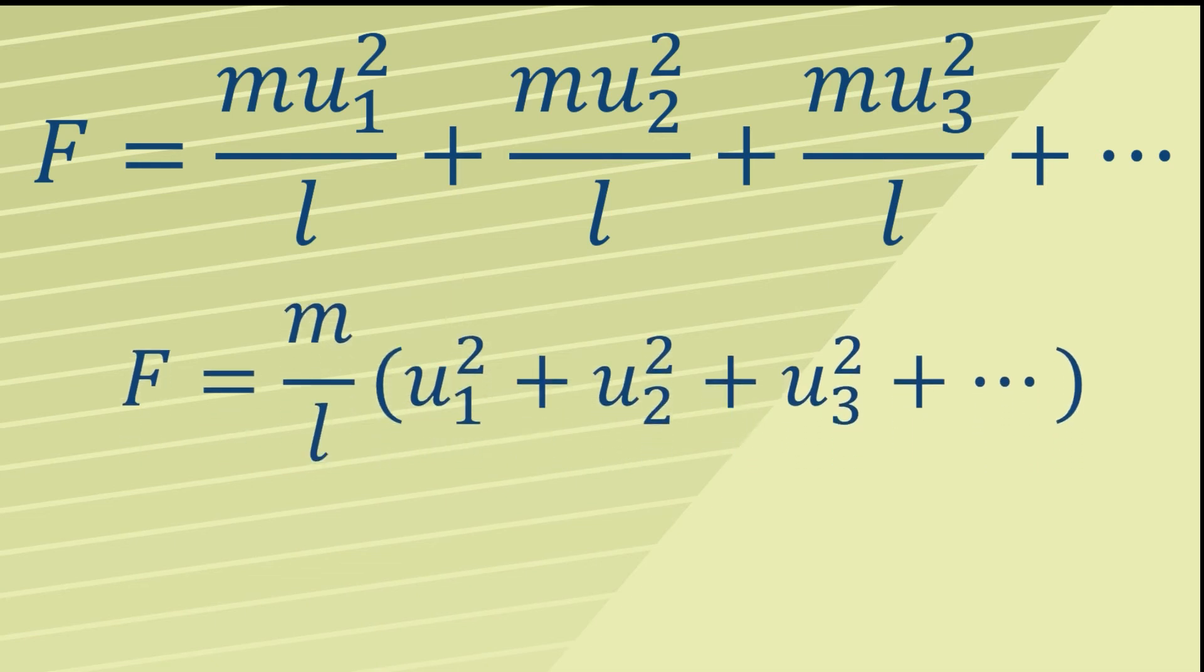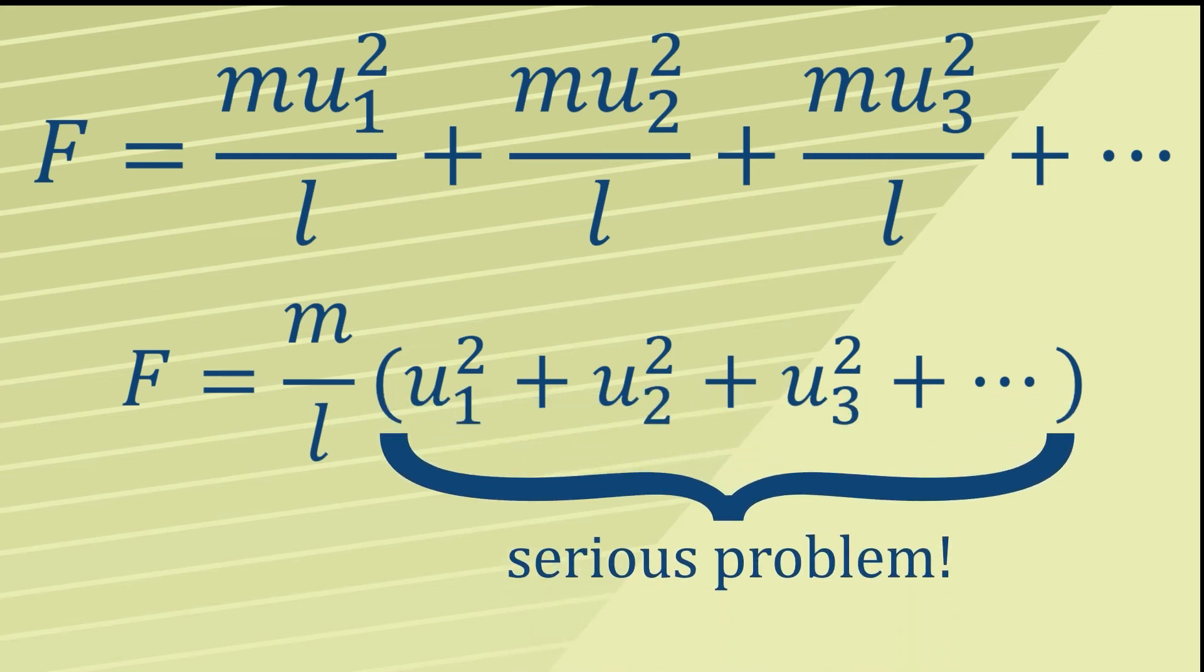If we factorize this expression, we find ourself with F equals M over L, open brackets, and then all the different speeds squared and added up. Now that's going to keep you busy.